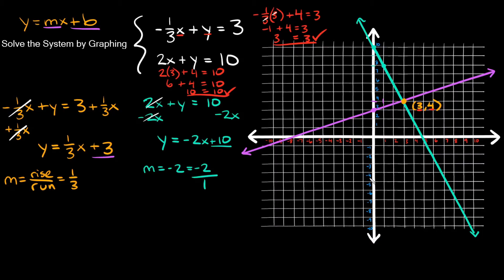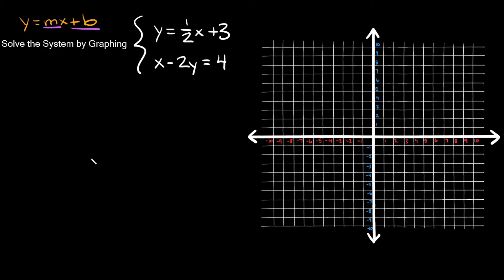I know this was a lot — let me know how much you despise math in the comments below. Now let's start the second example: solve the system by graphing. The equations are y equals one-half x minus three, and x minus 2y equals four.